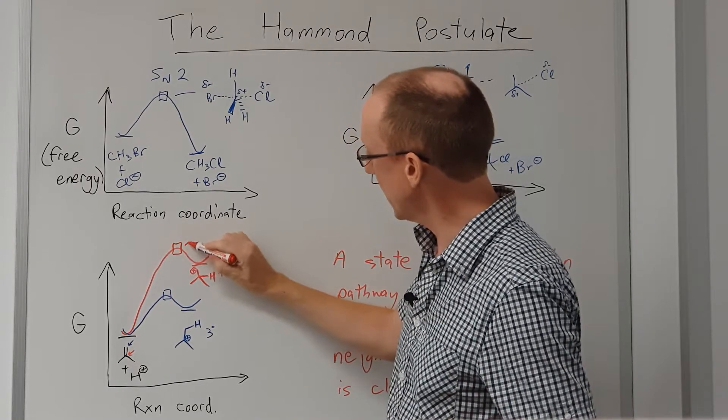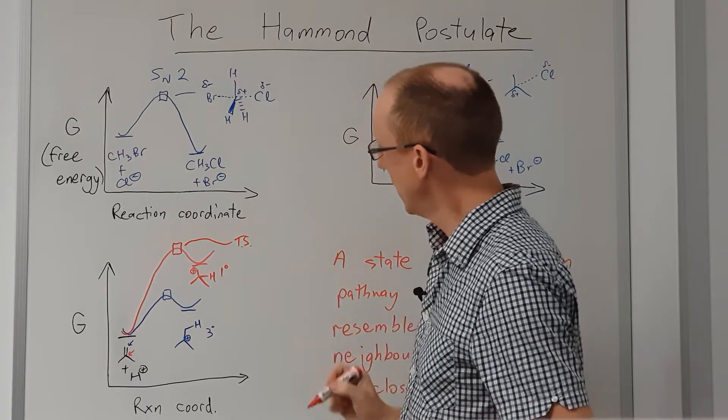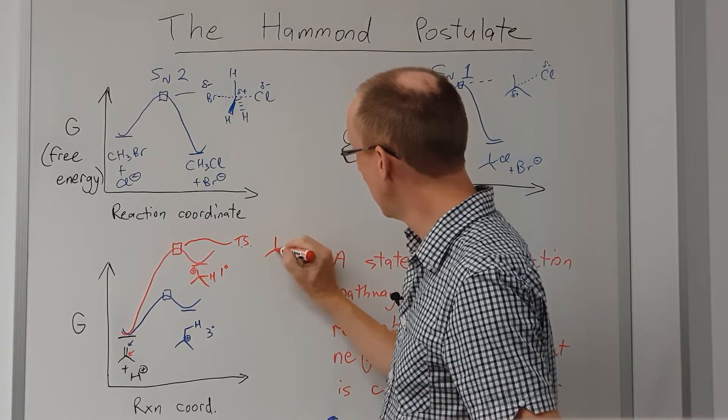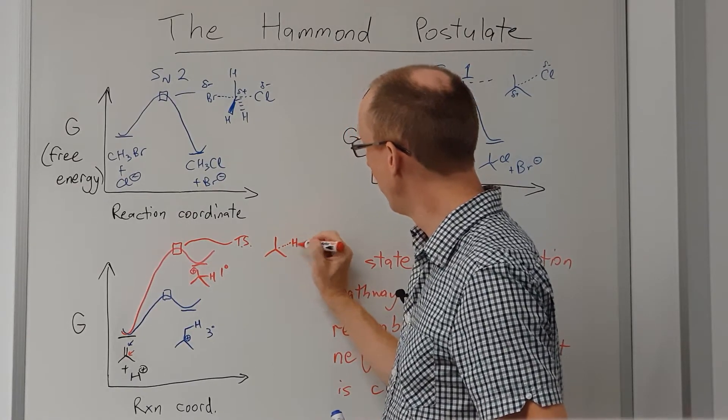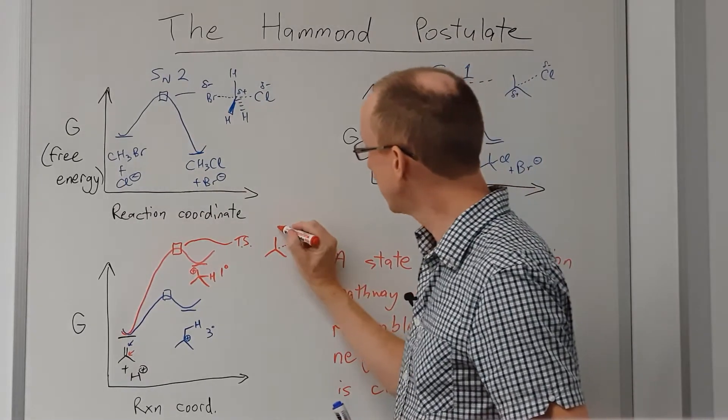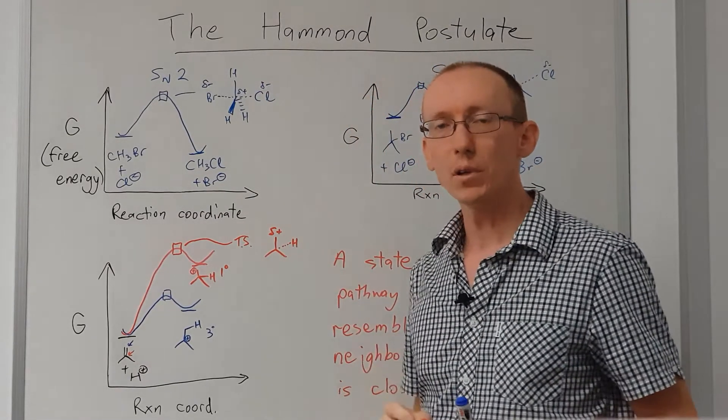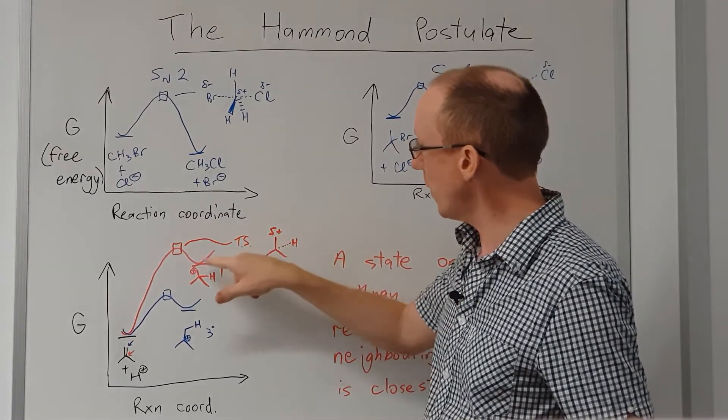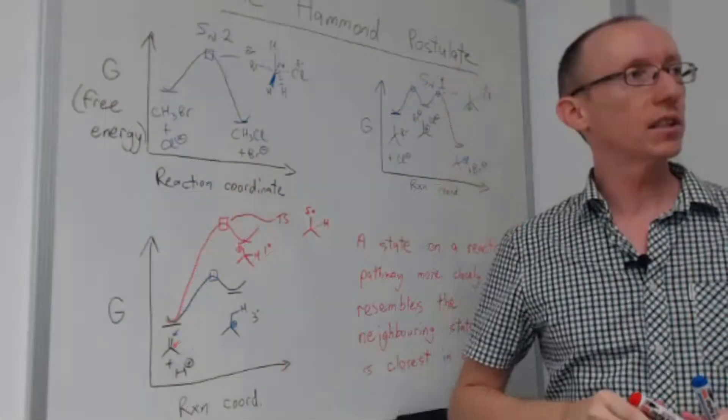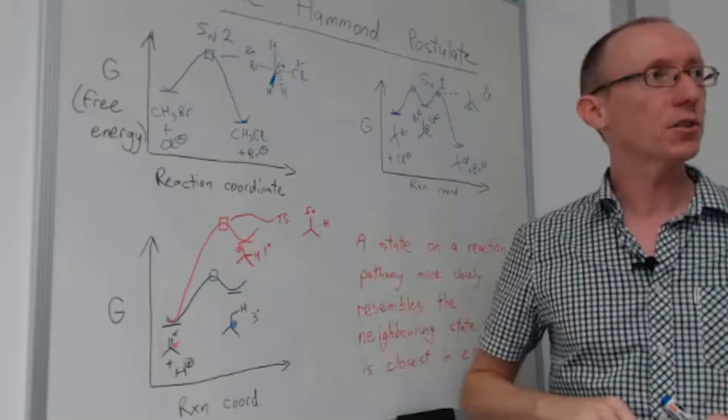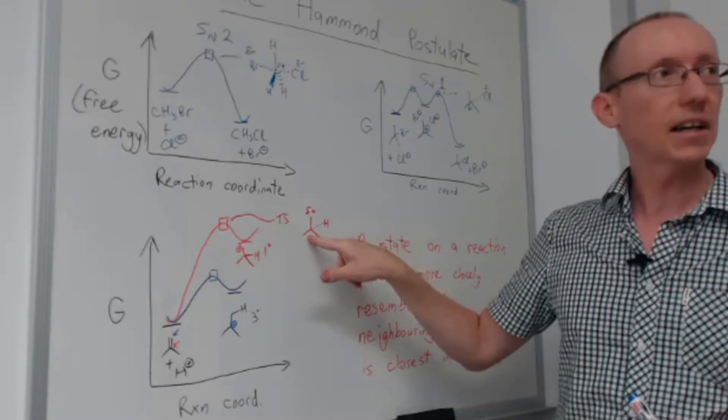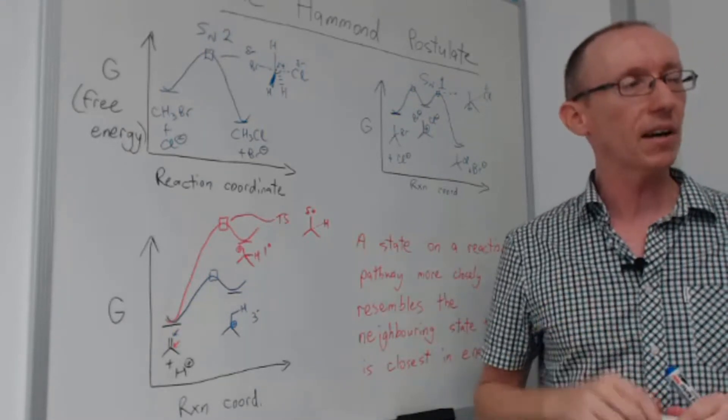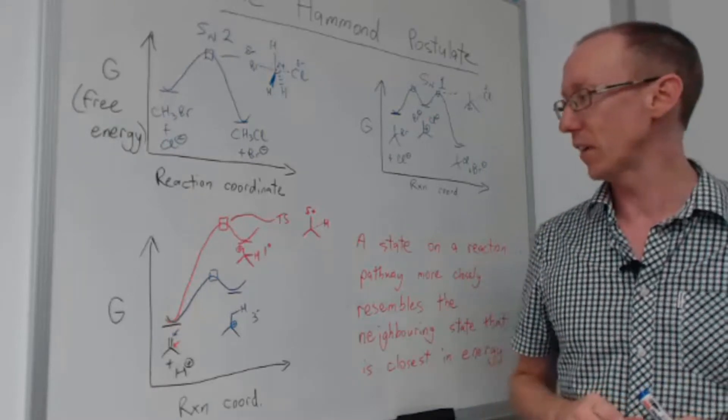For example, this transition state here is going to be very similar in structure to this primary carbocation. It's going to have a very well-developed bond to that proton, and it's going to have a very significant positive charge or partial positive charge at that primary position. So this transition state looks very much like the primary carbocation that it's closely associated with in energy and along the reaction pathway. Therefore, that transition state is also very energetically unfavorable for similar reasons to why the primary carbocation is unstable and unfavorable.